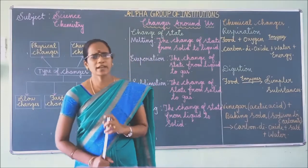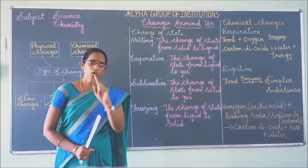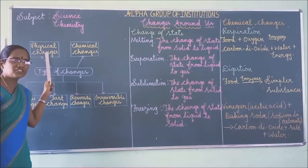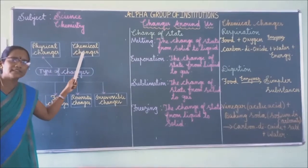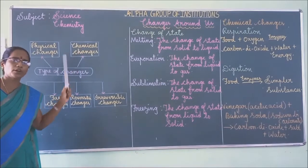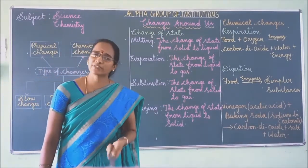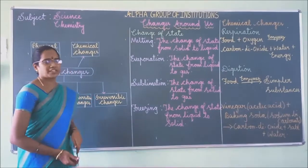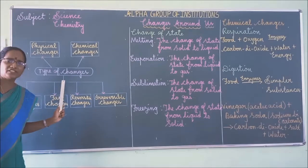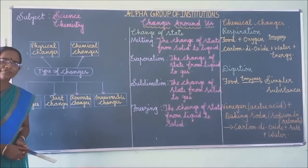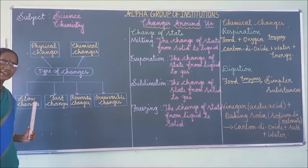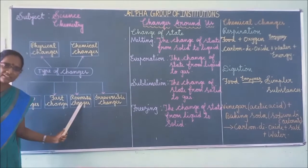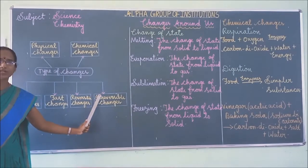Changes can be classified into two types: one is the physical change, and another one is the chemical change. Further, these changes can be classified into slow changes, fast changes, reversible changes, and irreversible changes.